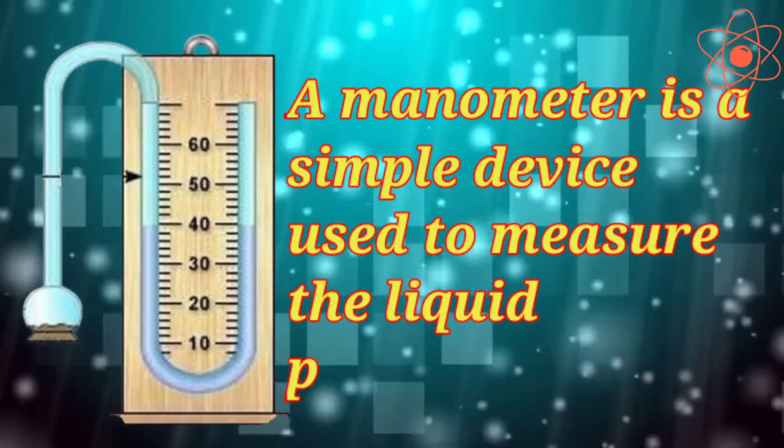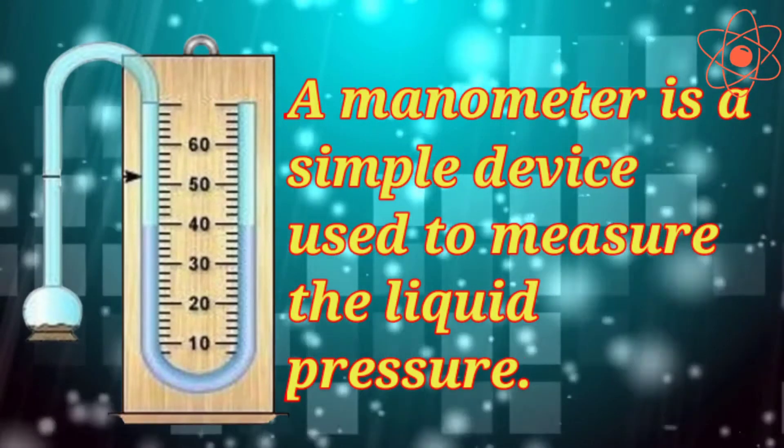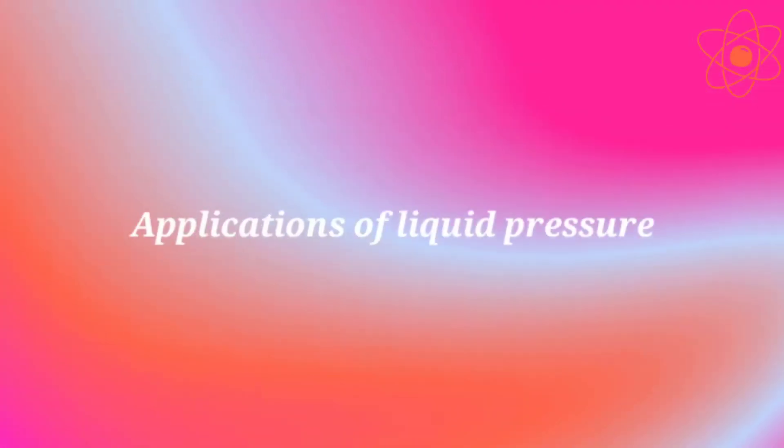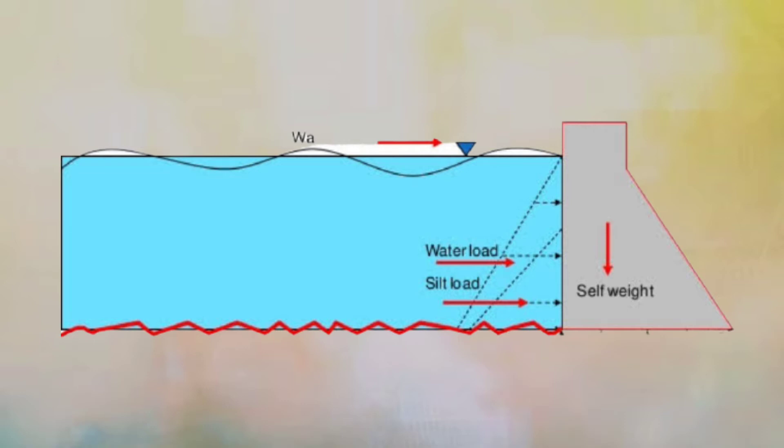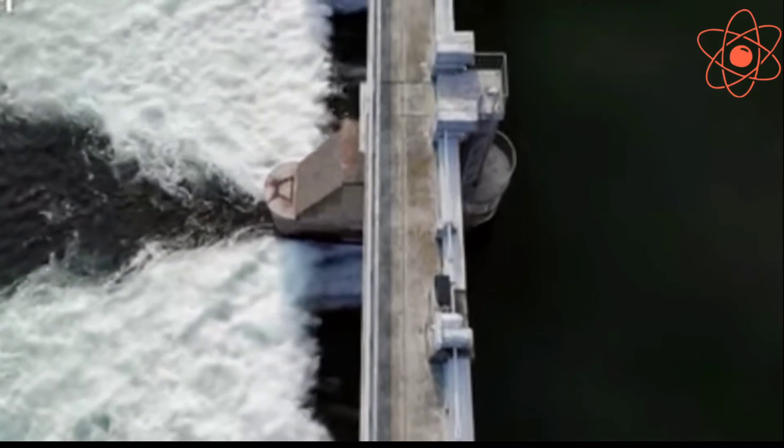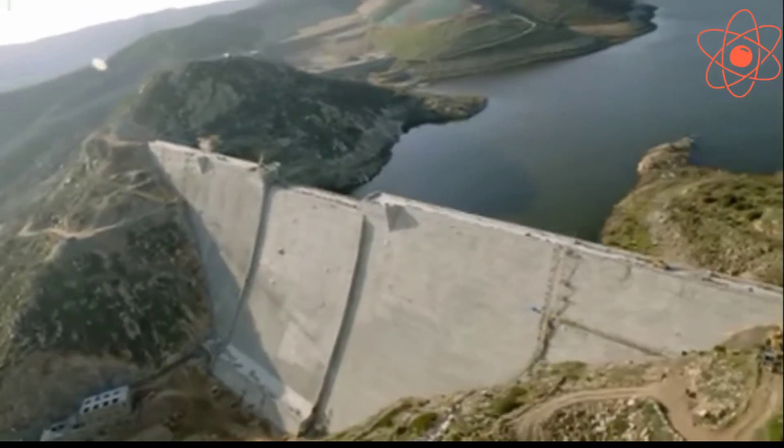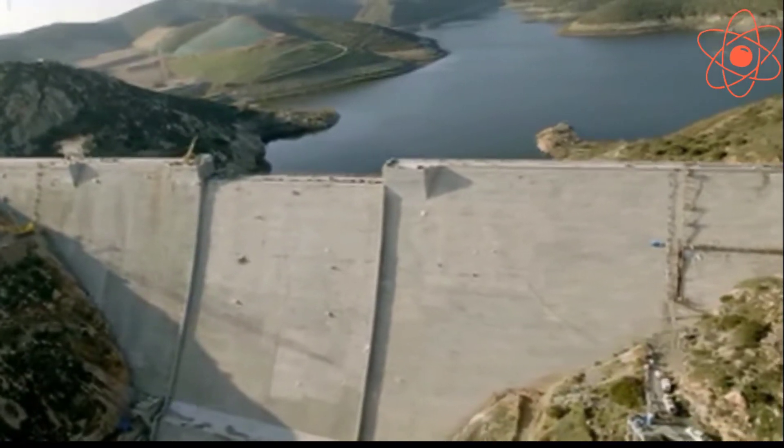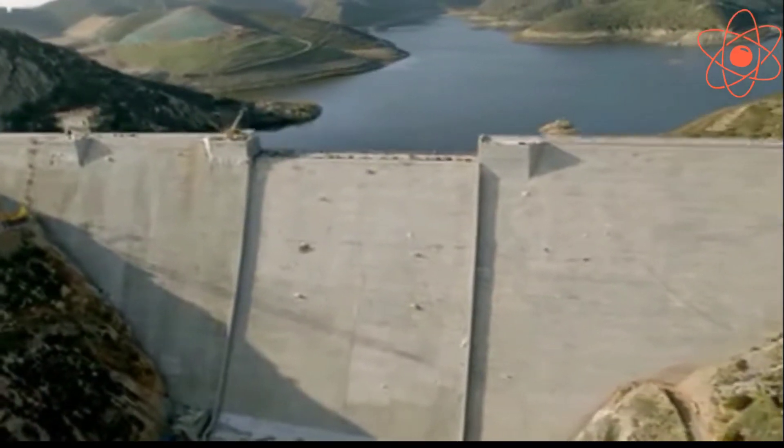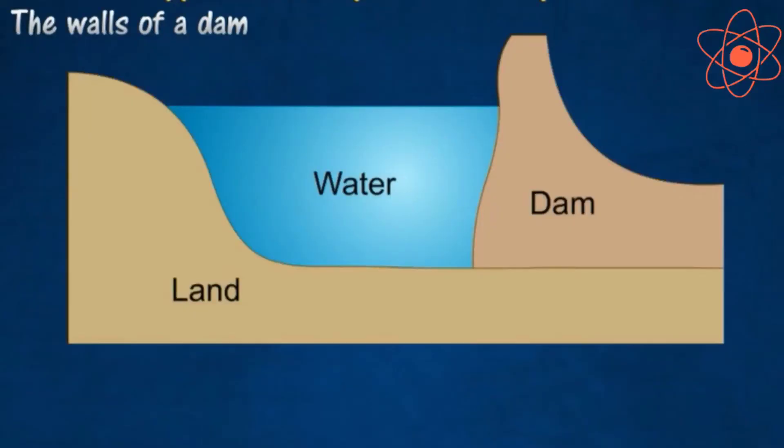Now, applications of liquid pressure. The walls of a dam are made thicker at the bottom. The reason is that the pressure exerted by a liquid increases with its depth. A thicker wall is required to withstand greater pressure, and therefore the wall of the dam is made with thickness increasing towards the base.